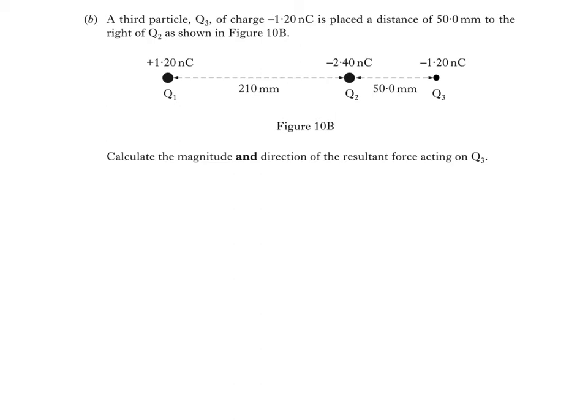So we'll be using this equation twice. Firstly, to find the force experienced by Q3 due to Q1, then the force experienced by Q3 due to Q2. We'll then add the two forces by vector addition. In the equation, Q1 and Q2 are the two charges involved. Epsilon 0 is a constant called the permittivity of free space found in the datasheet at the start of the exam paper, and R is the distance between the charges.